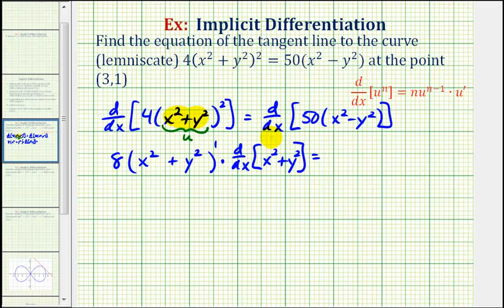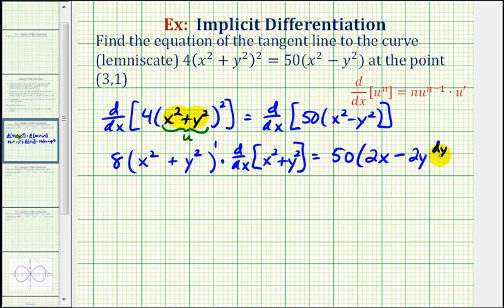On the right side, we have 50 times the derivative of x squared with respect to x, which is 2x, minus the derivative of y squared, which is 2y times dy/dx. We have a factor of dy/dx because this term contains y, not x.